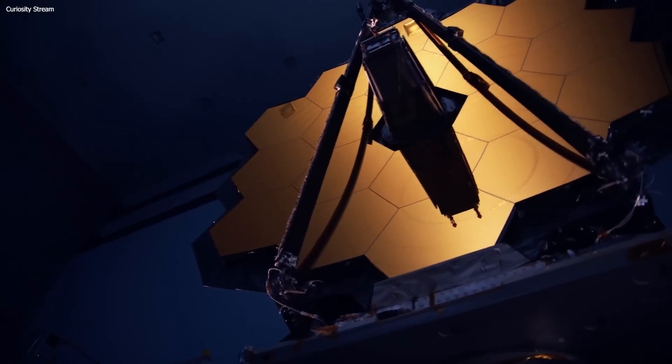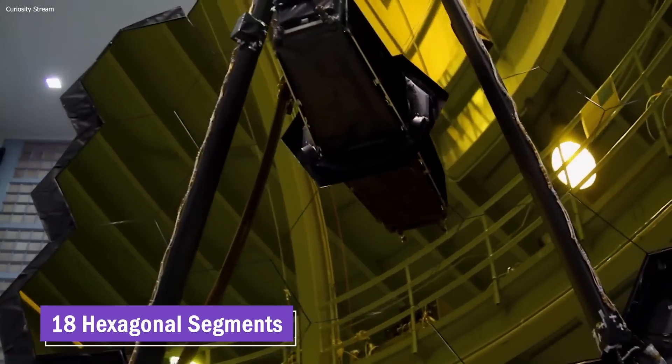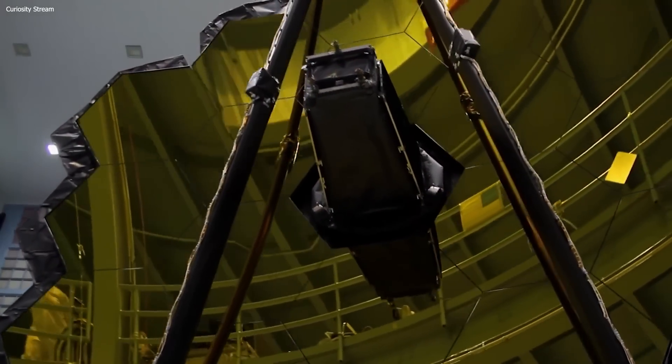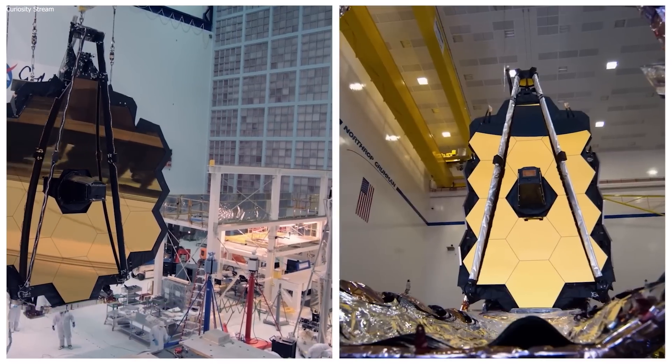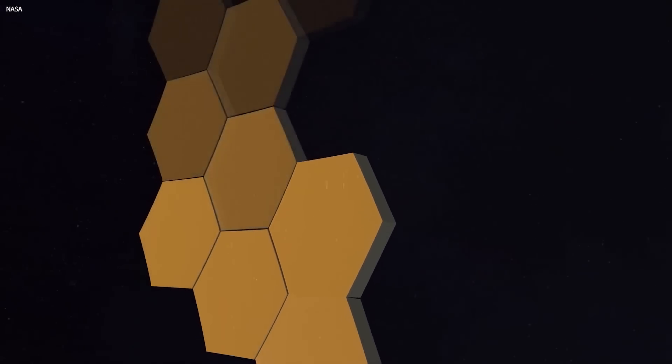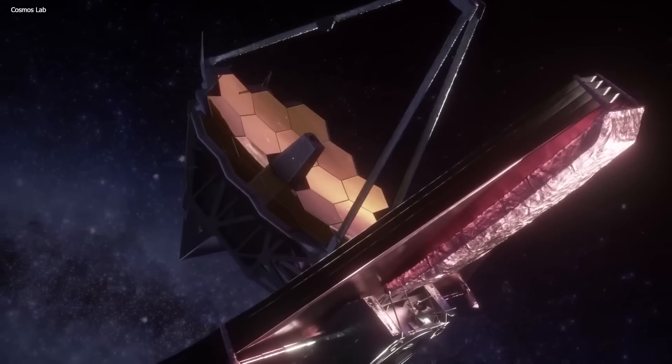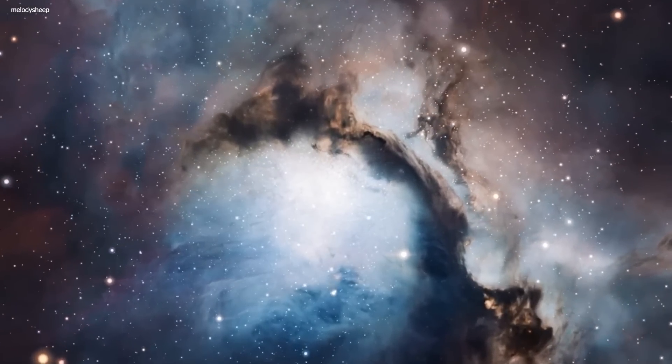The telescope's primary mirror is a technological marvel. Composed of 18 hexagonal segments made of beryllium coated with a thin layer of gold, the 6.5-meter diameter primary mirror offers a polished area of 26.3 square meters. This large mirror provides exceptional light-gathering capabilities, enabling the JWST to capture detailed and precise observations of celestial objects.